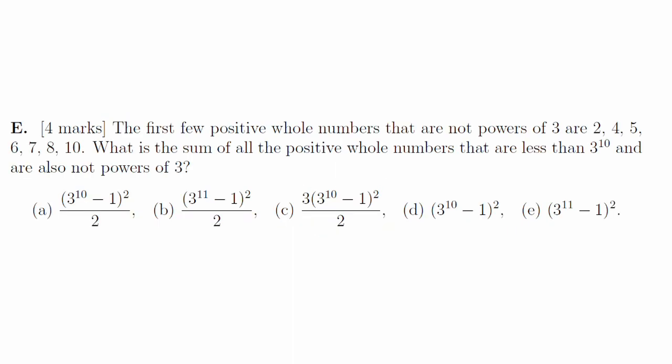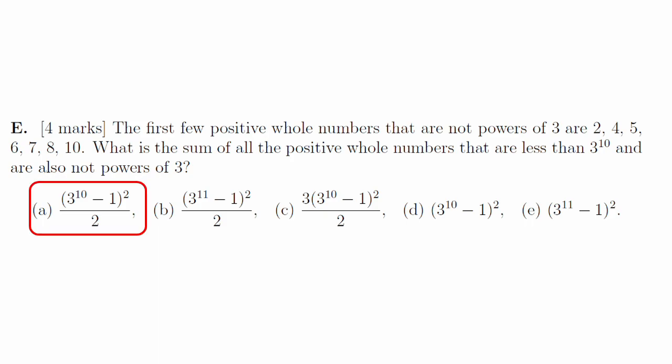1e. We need to take an arithmetic sequence for the sum of all of the numbers up to 3 to the power of 10 and subtract a geometric sequence for the sum of all the numbers that are powers of 3 up to 3 to the 10. If we do that and simplify our answer, it simplifies down to this option here.